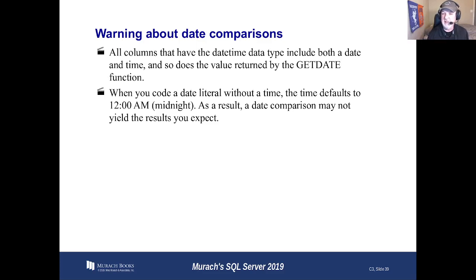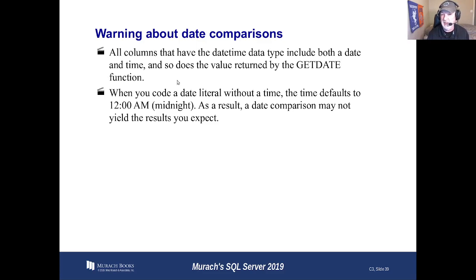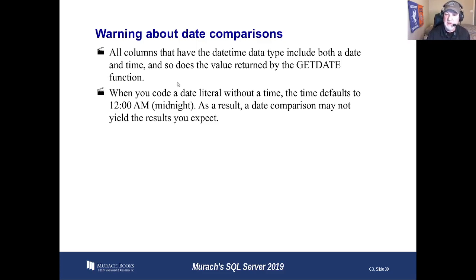So you're not going to be looking for exact dates. You're going to be looking from 2020 January 1st 12 midnight 00:00 to January 31st 11:59:59.999. So you're going to be looking between those dates, or you're going to have to use functions to truncate it and just look for dates. So keep that in mind as we move forward.